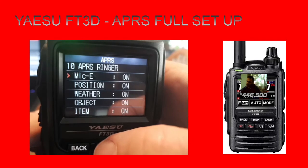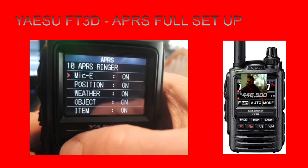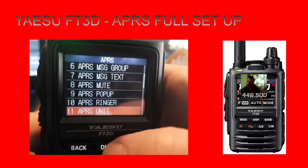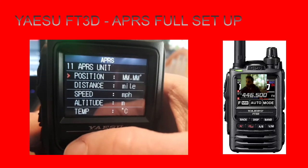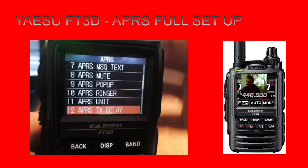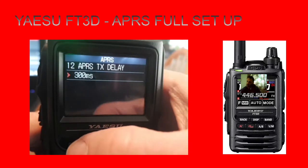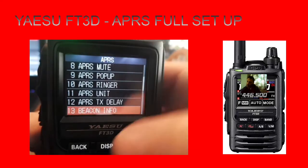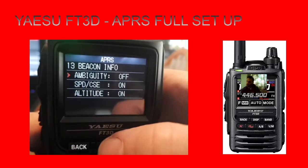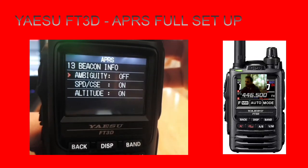APRS Ringer - I don't really use that, I'm guessing it could be a notification sound. APRS Units - you can decide if it's kilometers or miles. APRS TX Delay - there's a 300 millisecond delay there but you can change that. Beacon Info - I haven't really used that one.